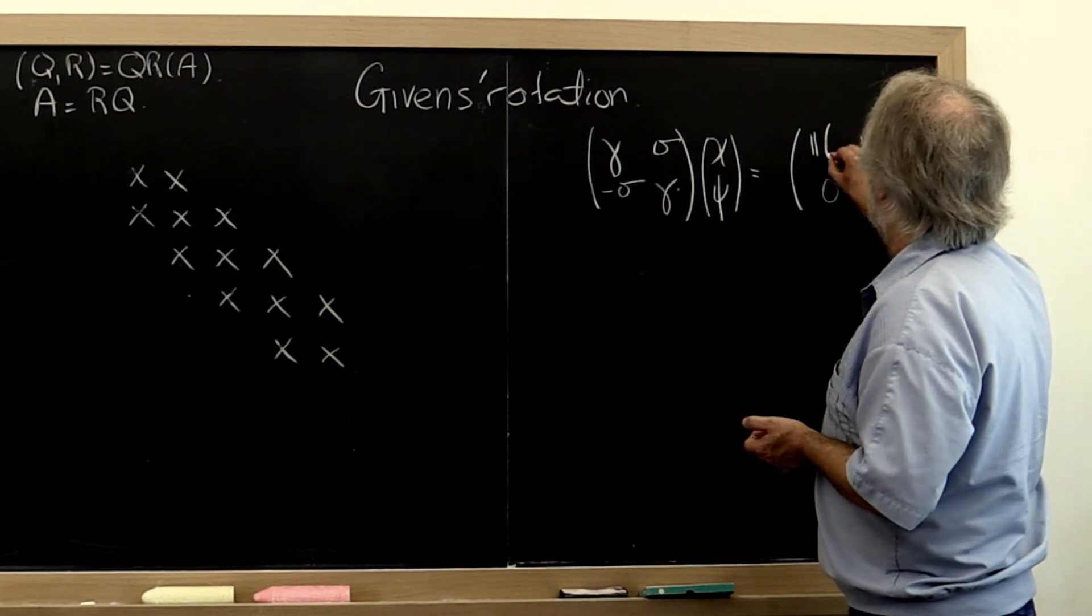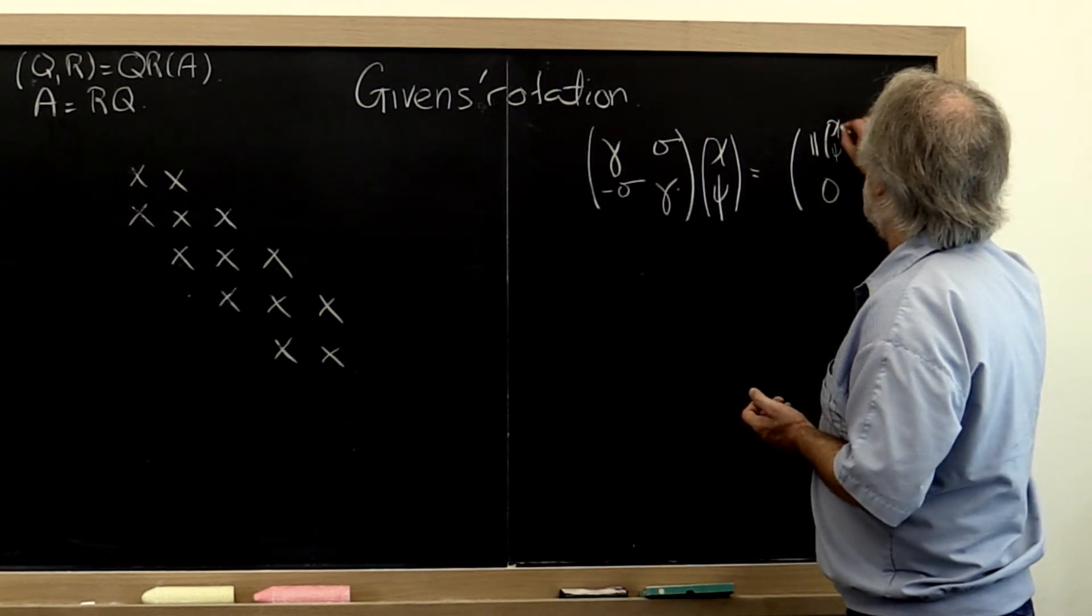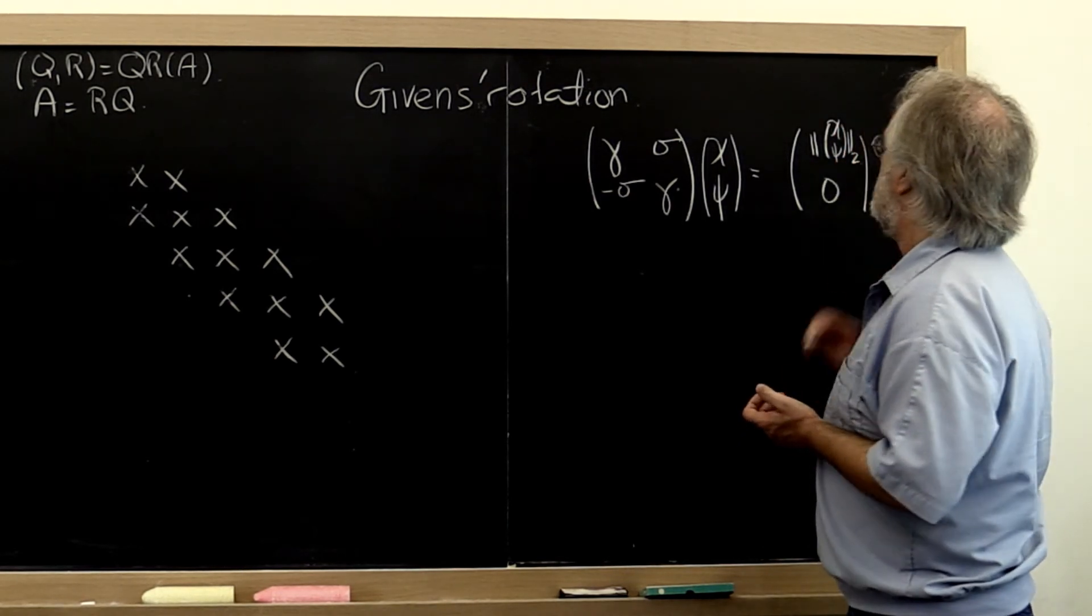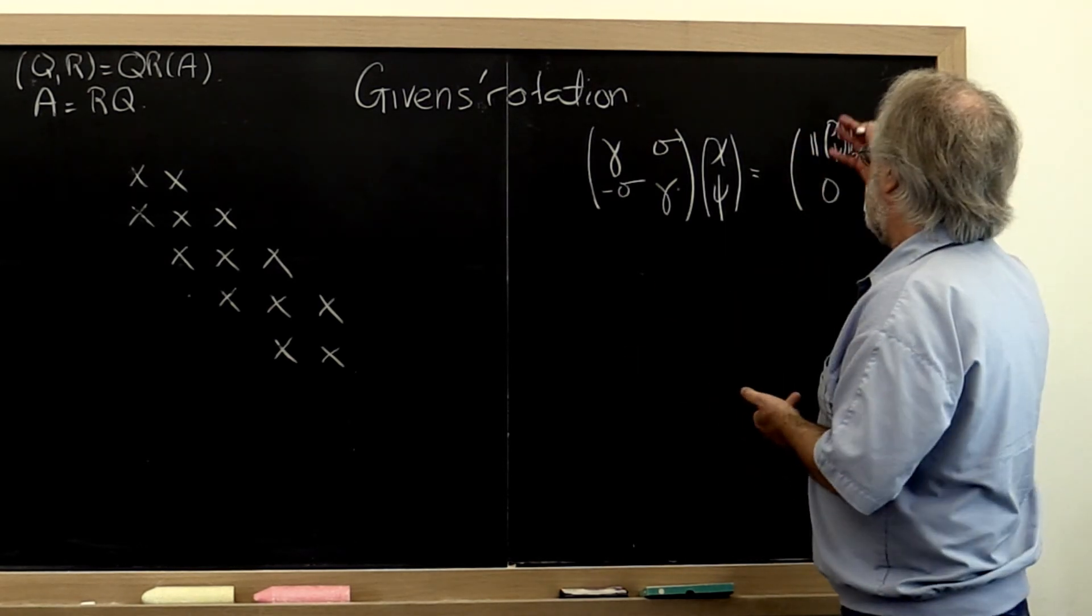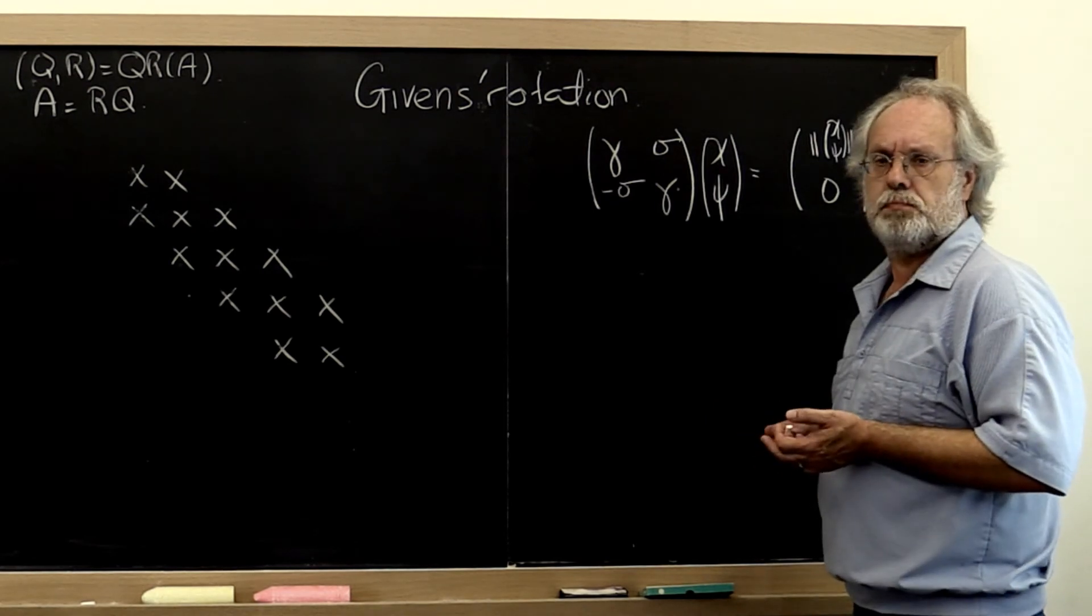How shall we write that 2-norm? I guess it's the 2-norm of chi psi. And then you could say, yeah, and we can make it plus or minus. And actually in this particular case we can just make sure that it's always positive.